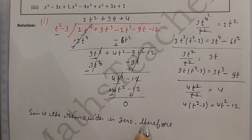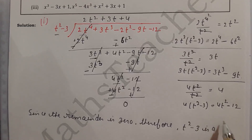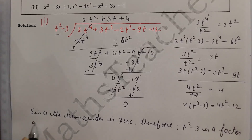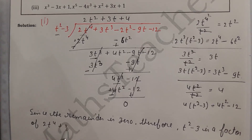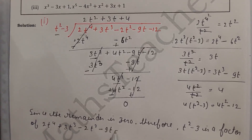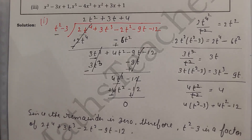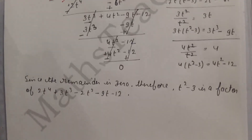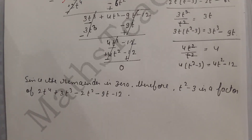Therefore, t² − 3 is a factor of 2t⁴ + 3t³ − 2t² − 9t − 12, because the remainder is zero. If you have any doubts, please comment in my comment box. Do not forget to like, subscribe, and press the bell icon, as I am going to cover the entire NCERT syllabus. Thank you.